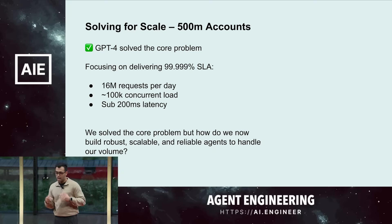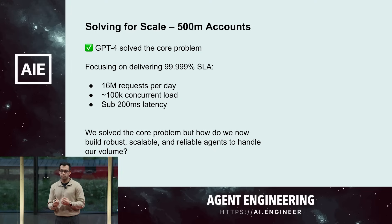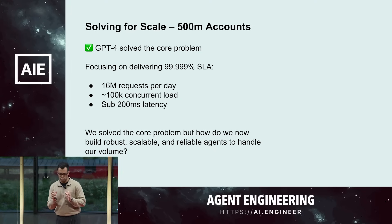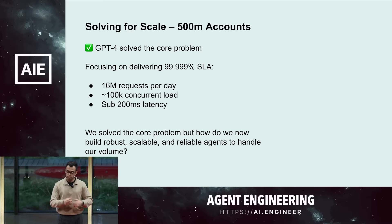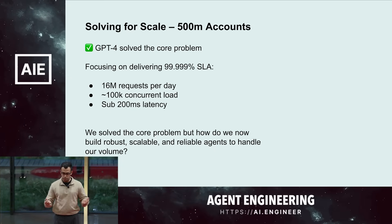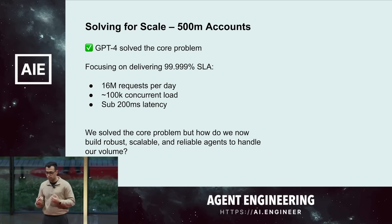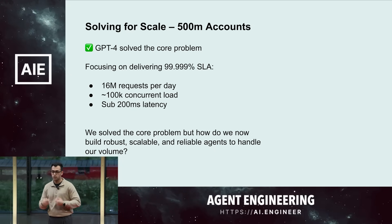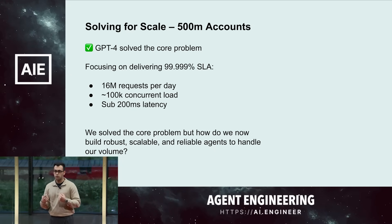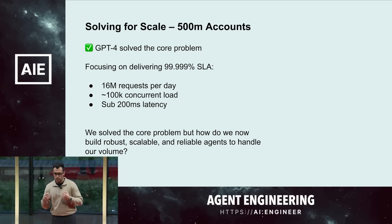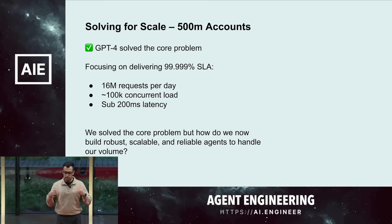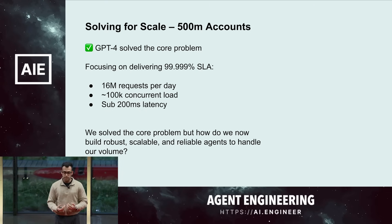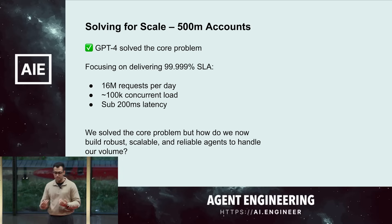The problem shifted from solving that core problem of making sense of unstructured data — which GPT had solved — to: how do we scale this system? How do we build a robust agentic workflow that can handle this kind of volume reliably?